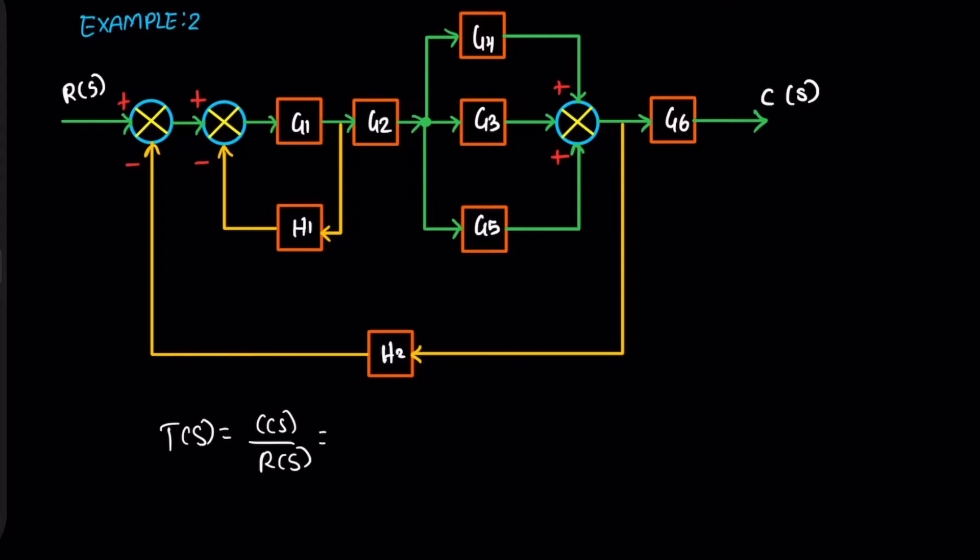The forward path 1, this is a straight line. The path gain is the product of G1, G2, G3, and G6.